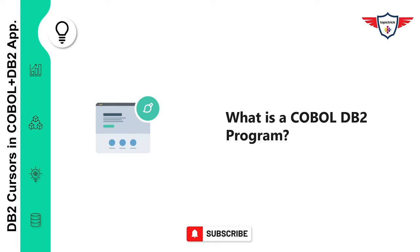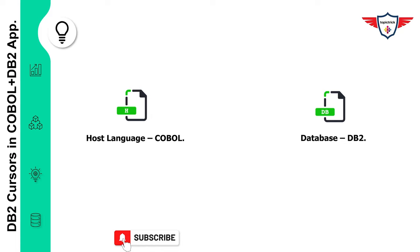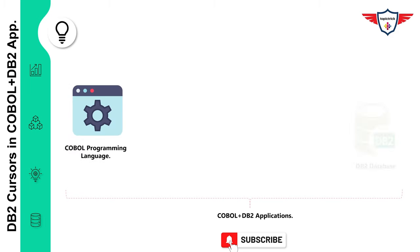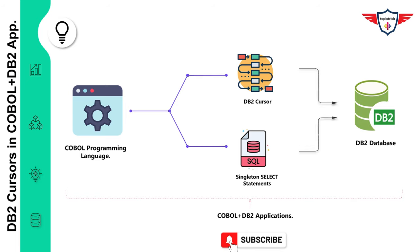Let's start with an introduction to COBOL DB2 application. Host language and database are two separate entities, and their working principles are different. But that does not mean you cannot combine their capabilities into a single program. Using COBOL as a host language and IBM DB2 as a database, you can write a COBOL DB2 program that executes business functionality and accesses data from the DB2 database using embedded SQL statements. The output of an SQL statement is stored as a result set, and this data can be accessed by an application program with the help of DB2 cursors.